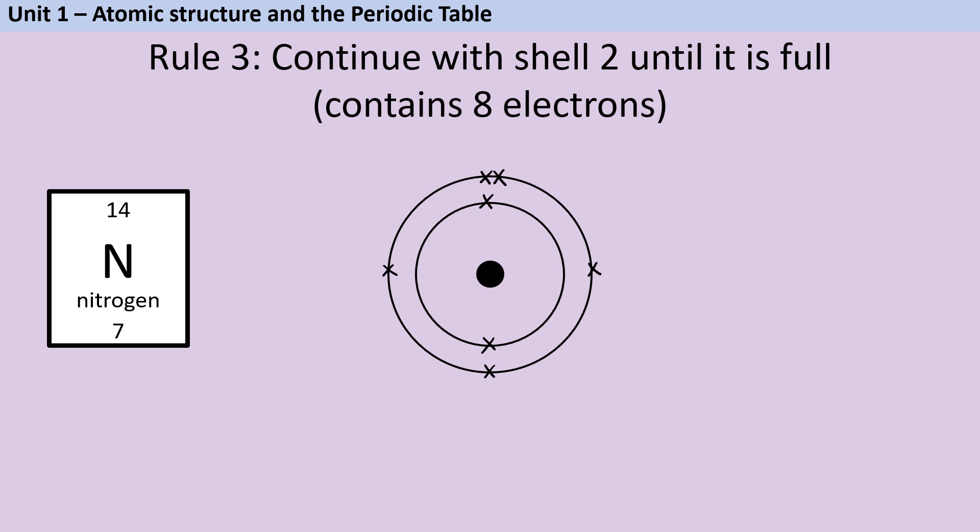Nitrogen is where we see people starting to make mistakes because they always want to start a third shell when they've only put four electrons into this second shell. Just remember that second shell can contain up to eight electrons and we're going to place these next five electrons that we have in nitrogen north, south, east, west and then we're going to start pairing them together. So we have two in our first shell and then five in our second shell making seven in total.